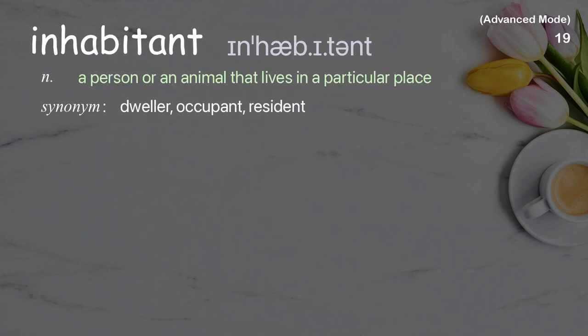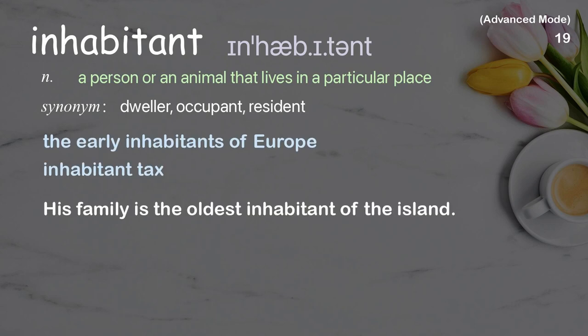Inhabitant: a person or an animal that lives in a particular place. Examples: the early inhabitants of Europe, inhabitant tax. His family is the oldest inhabitant of the island.